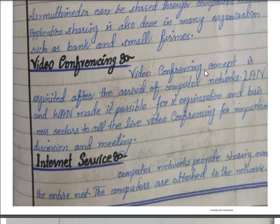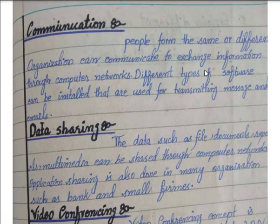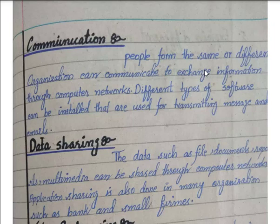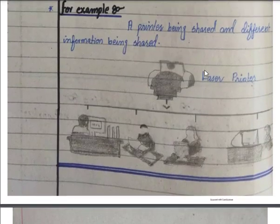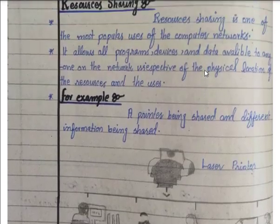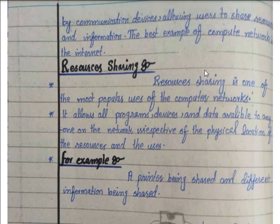To recap, the different uses of computer networks include internet services, video conferencing, resource sharing, communication, and data sharing. These are all the different uses of computer networks.